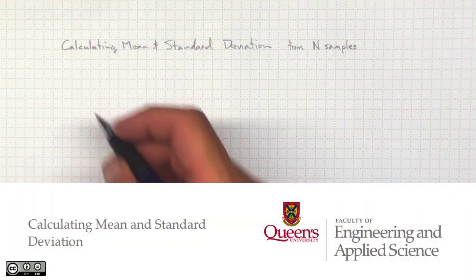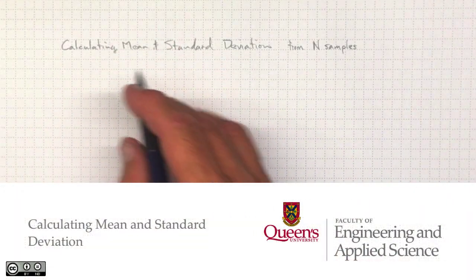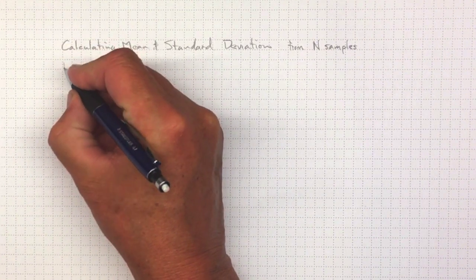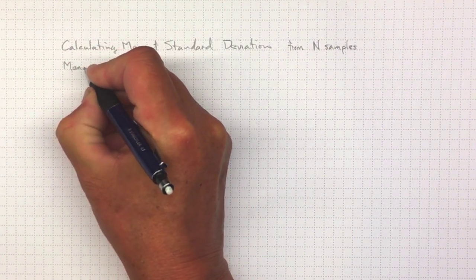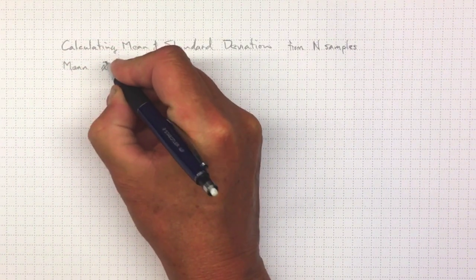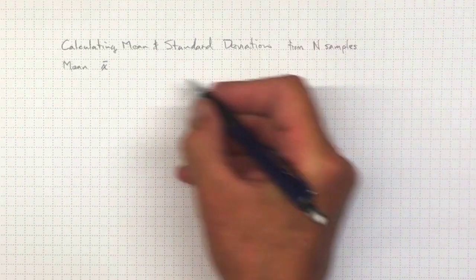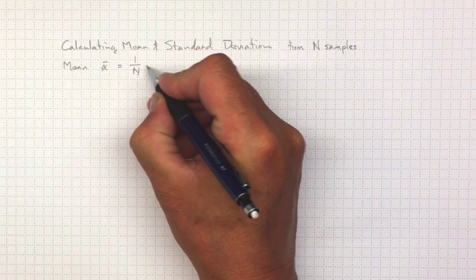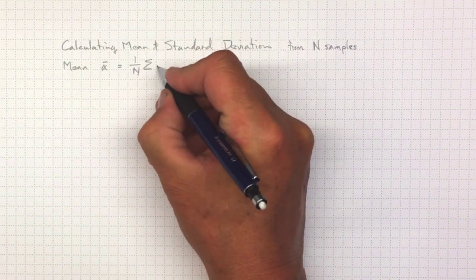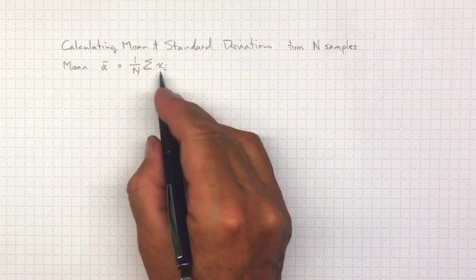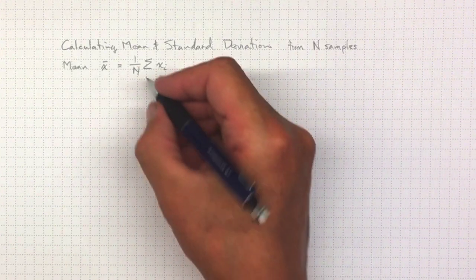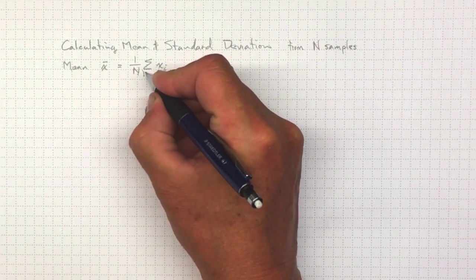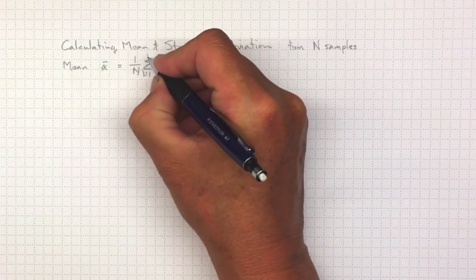We can calculate the mean and standard deviation directly from their definitions. The mean x̄ of a set of n samples is 1 over n times the sum of all the different values that x takes on in that n sample, going from i equals 1 to n.